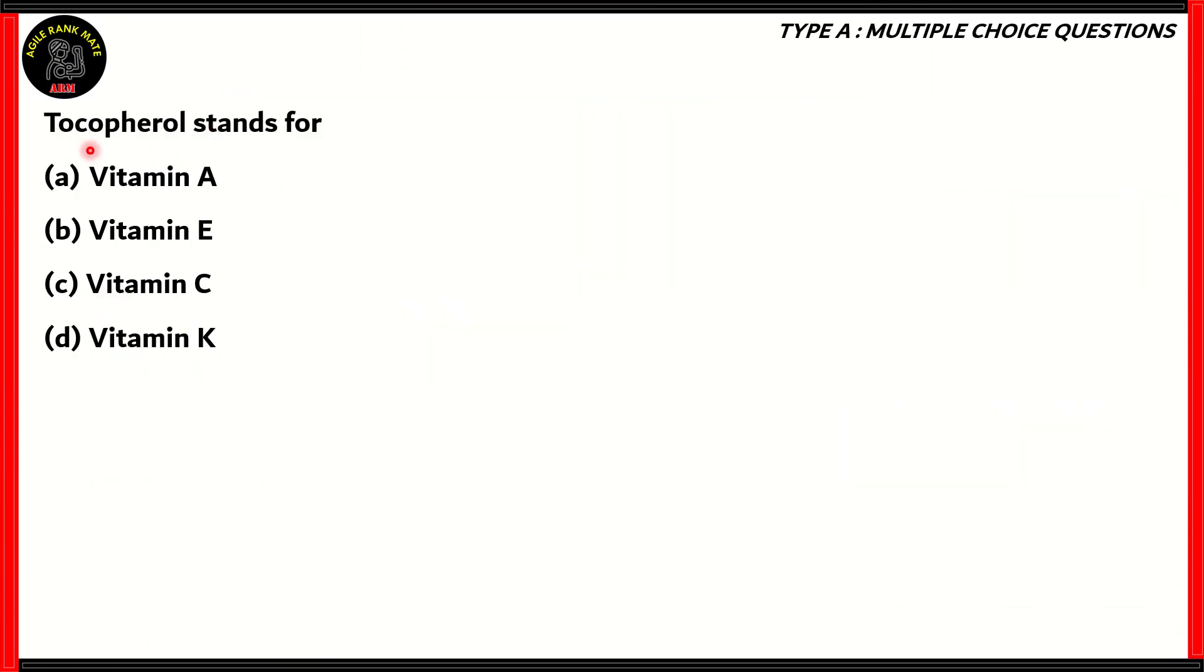Here's our first question. Tocopherol stands for vitamin A, vitamin E, vitamin C, or vitamin K. We know the vitamins by these names. However, they are chemicals, so they do have certain chemical names. So tocopherol stands for which of these vitamins: A, C, E, or K? Let's look at each of the options.